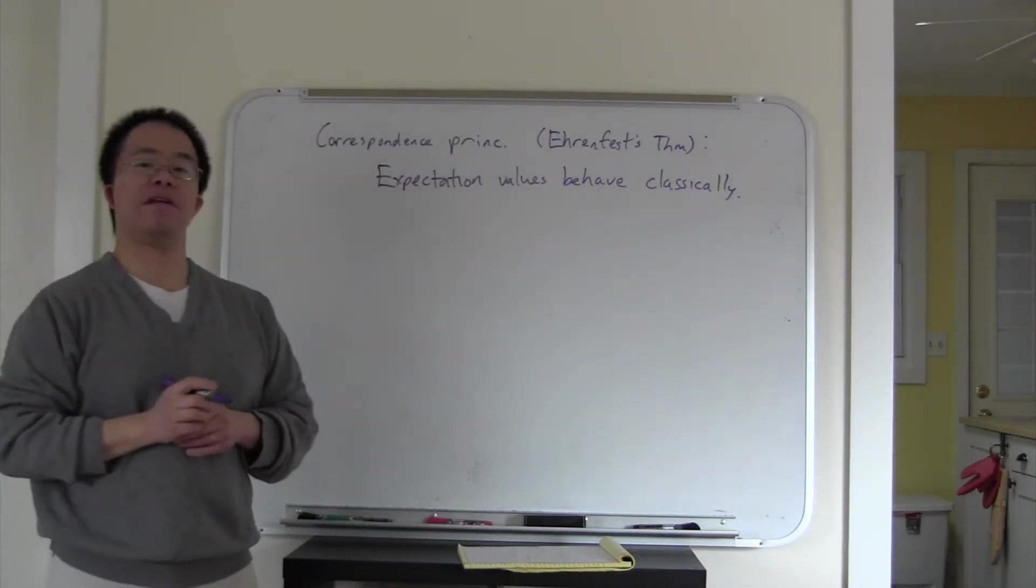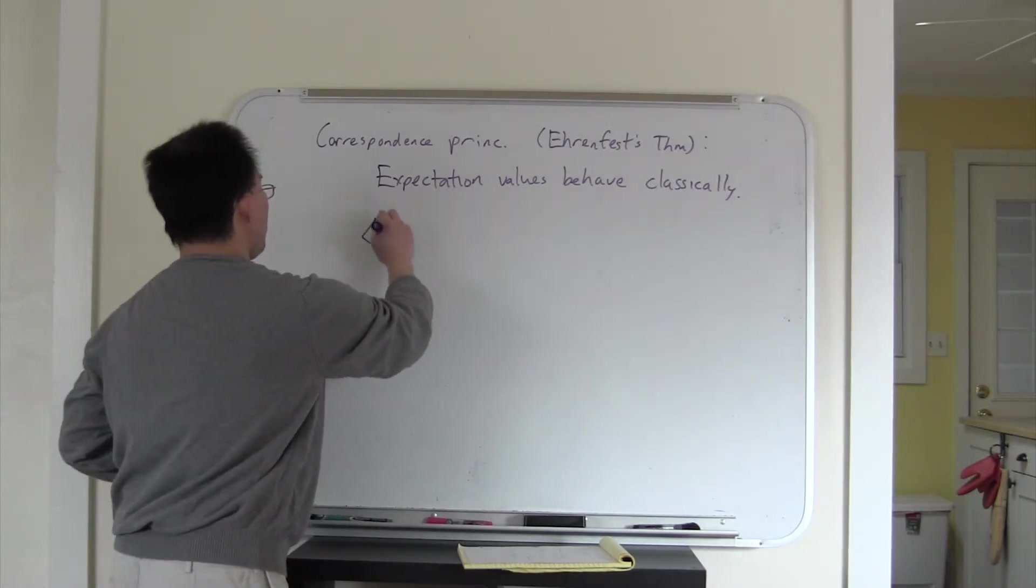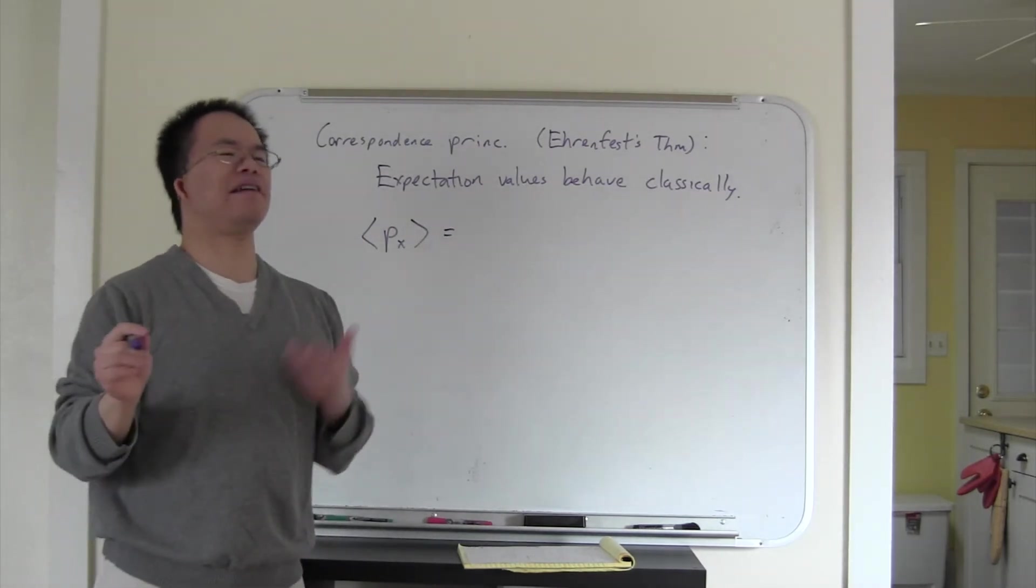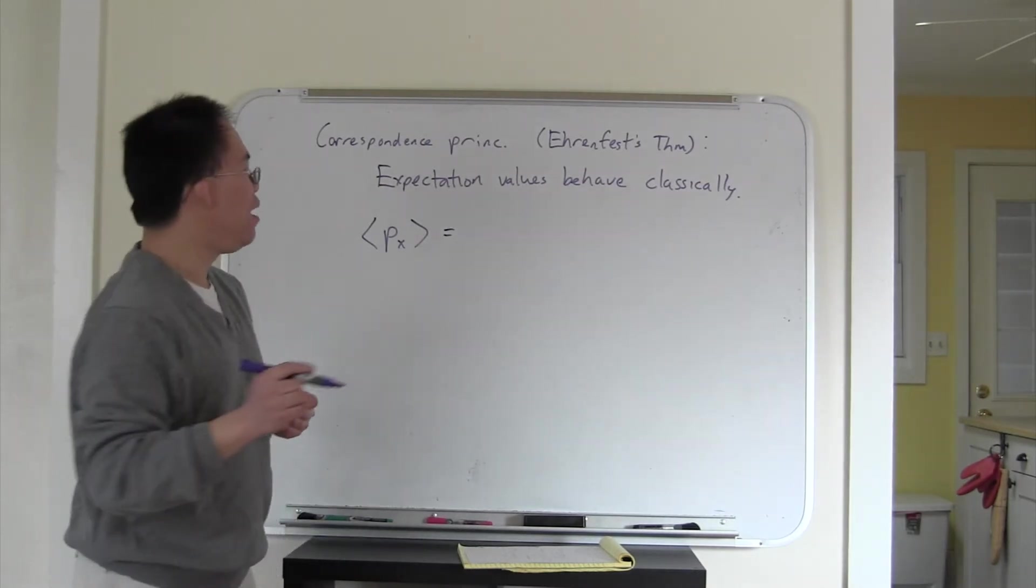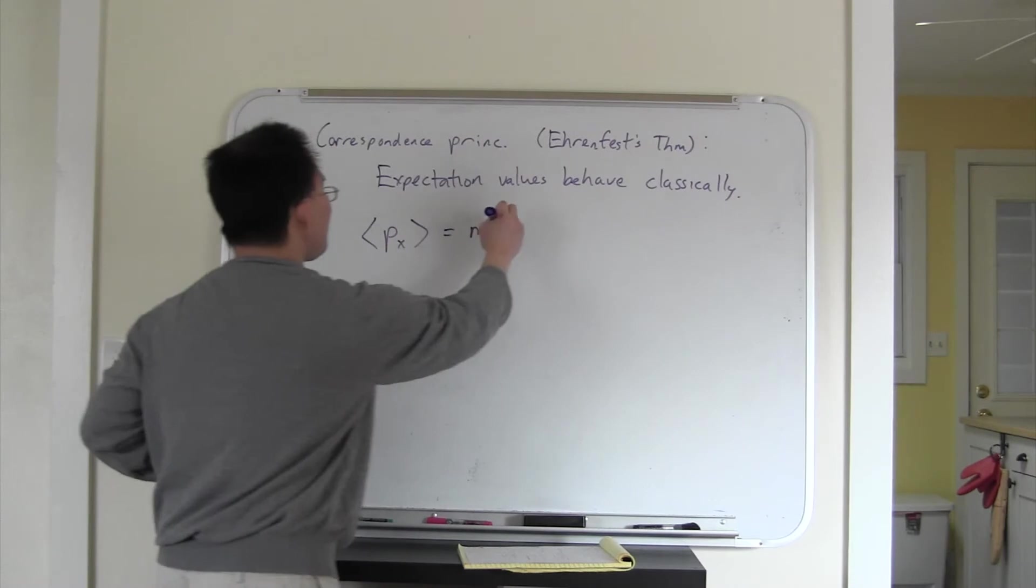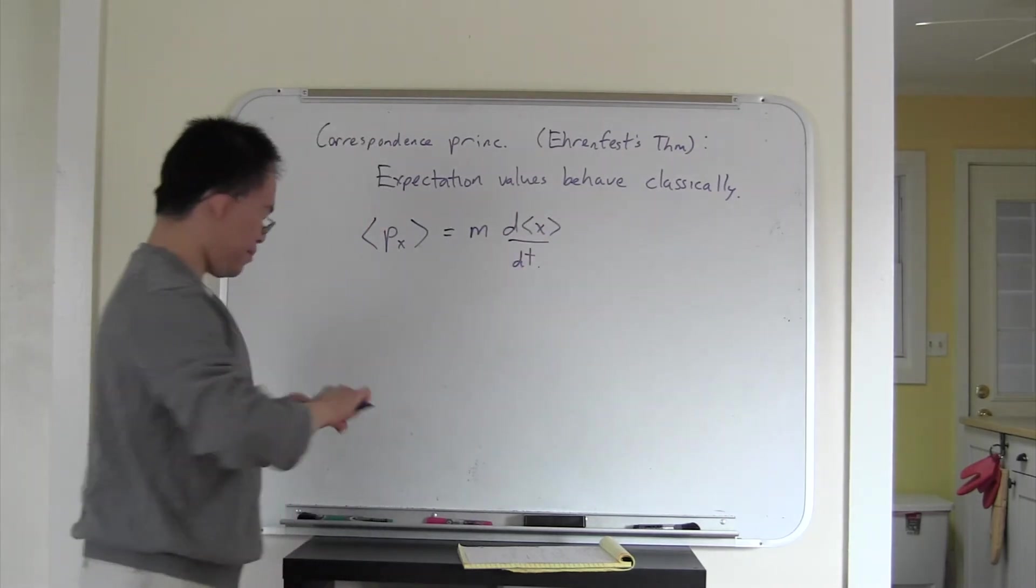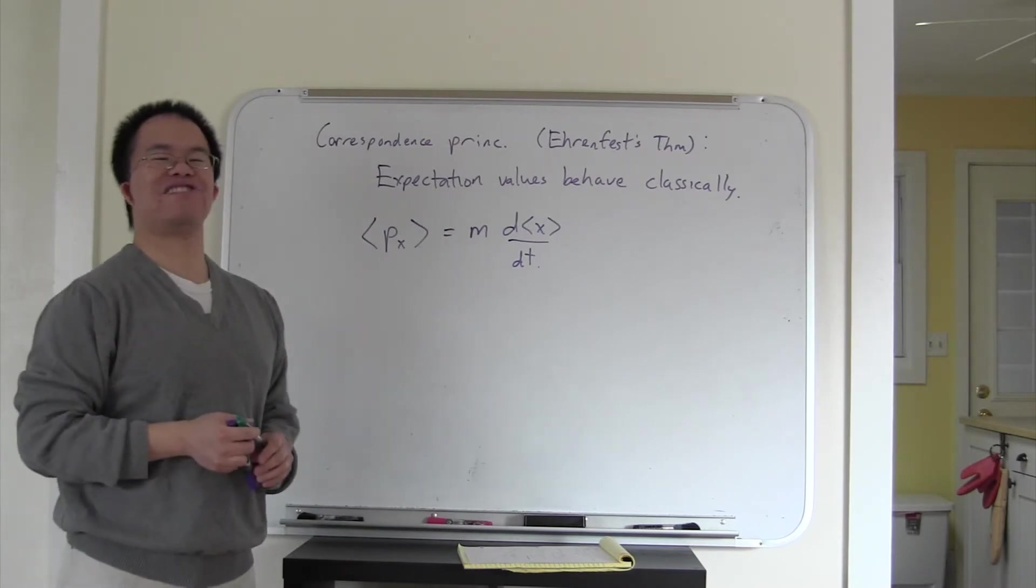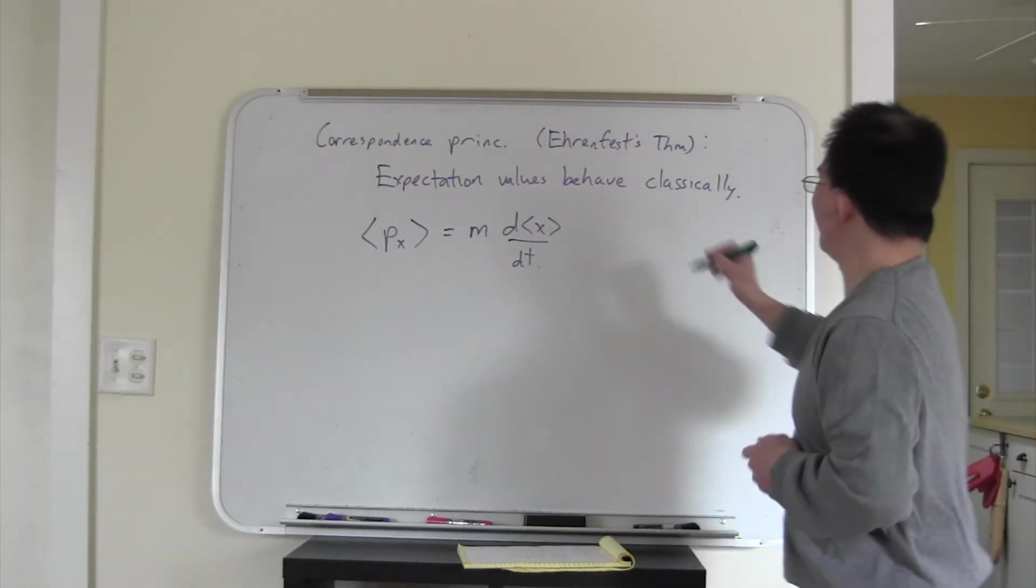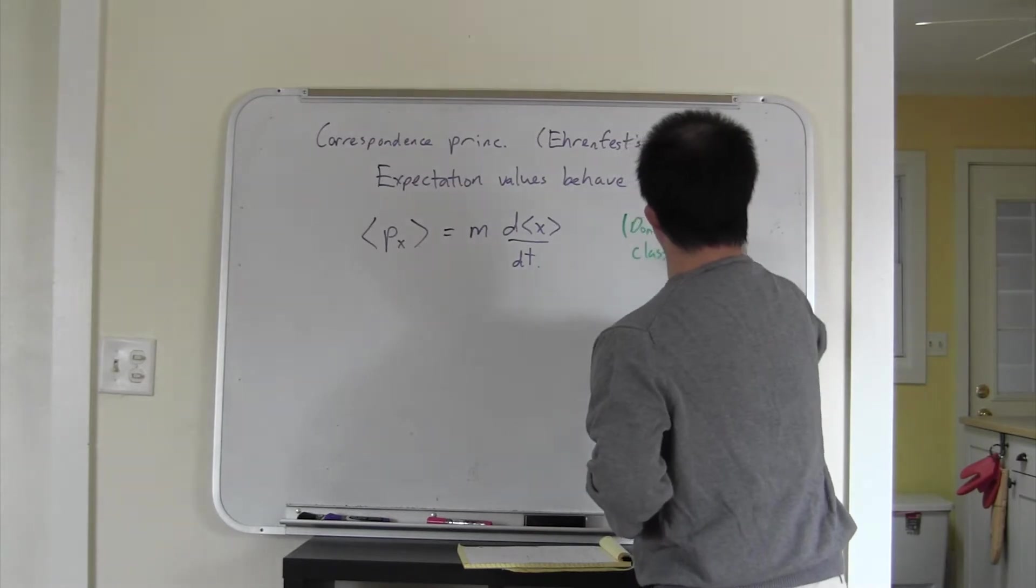The idea here is that expectation values ought to behave classically. So in particular, if we're thinking about the expectation value of momentum in the x direction, so I'll write that as expectation value of p sub x. Well, that ought to look something like m times v, right? Classical momentum. And if it's the expectation values that are classical, it turns out that this is going to be m, so if we have a particle of mass m, d the expectation value of x, dt. There might be a picky way of saying this, which is I'm going to write it over here. Let's not break classical physics more than we have to. So don't break classical physics.